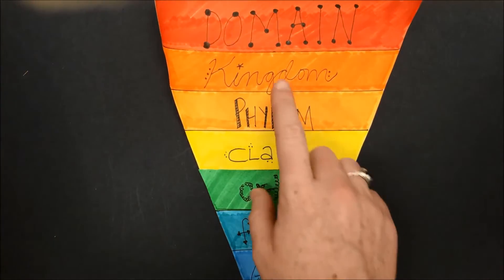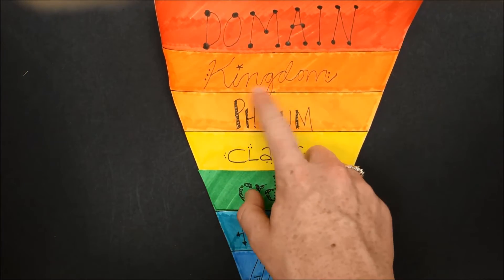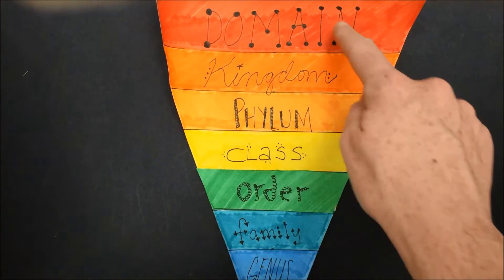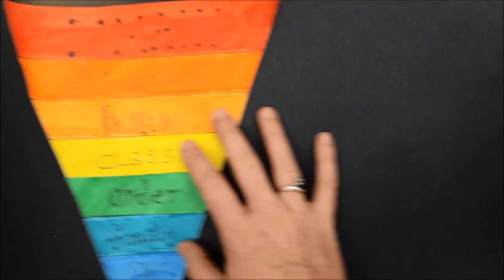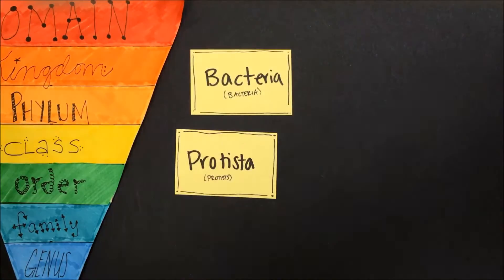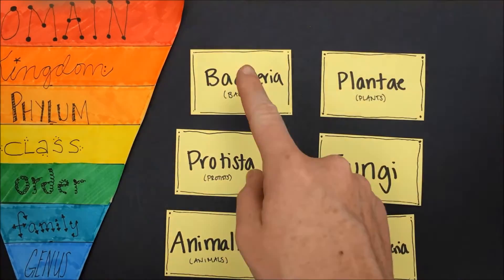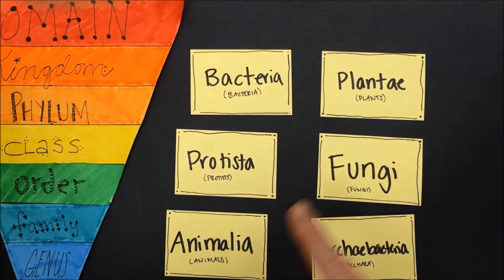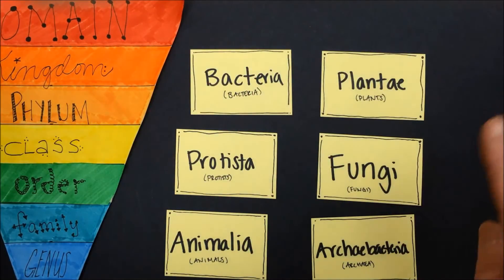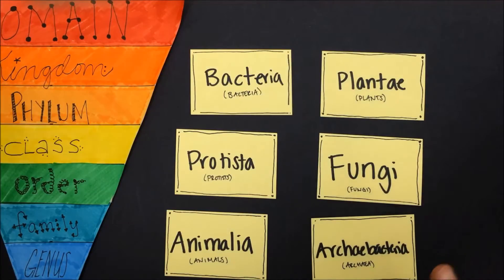Our next level down is kingdom. Although there are three domains, there are six kingdoms of life: bacteria, protists, animals, plants, fungi, and archaea.